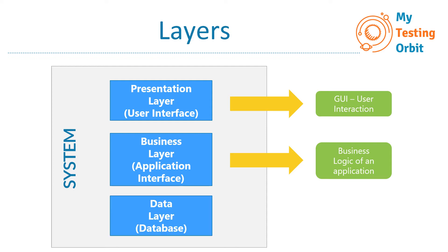And if we look at the bottom layer, that would be the data layer — for example, our database — and this will consist of application data. Now that we have a good idea of all the layers of a system and where APIs reside, let's have a look at an API example.